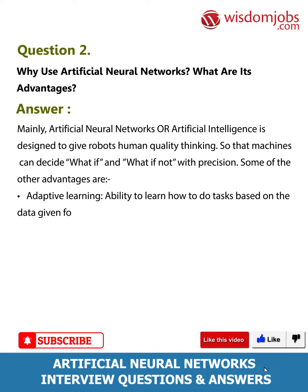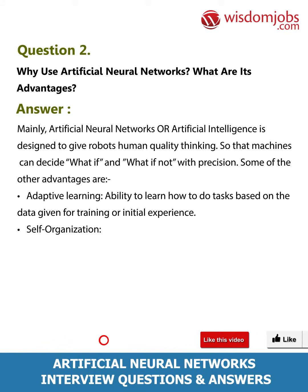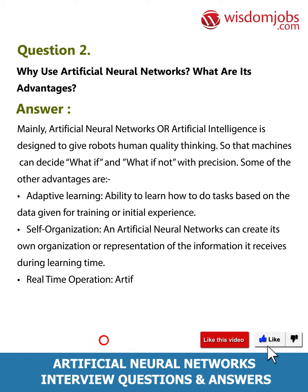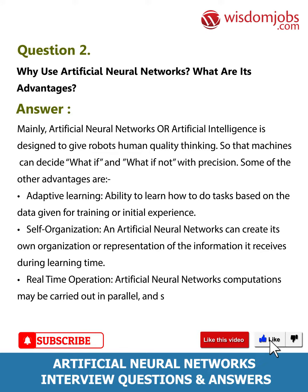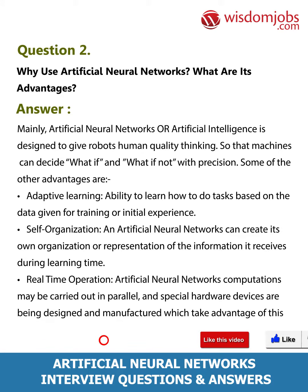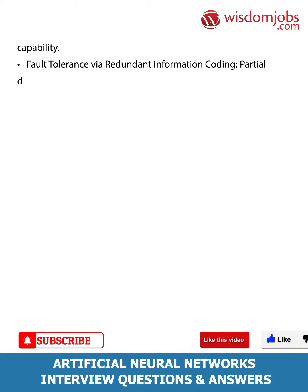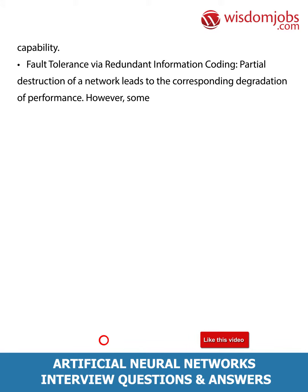Self-organization: an artificial neural network can create its own organization or representation of information it receives during learning. Real-time operation: ANN computations may be carried out in parallel, and special hardware devices are being designed to take advantage of this capability. Fault tolerance via redundant information coding: partial destruction of a network leads to corresponding degradation of performance, but some capabilities may be retained even with major network damage.